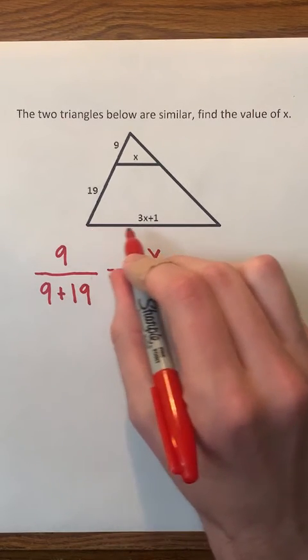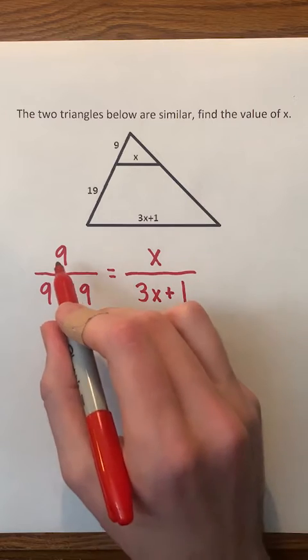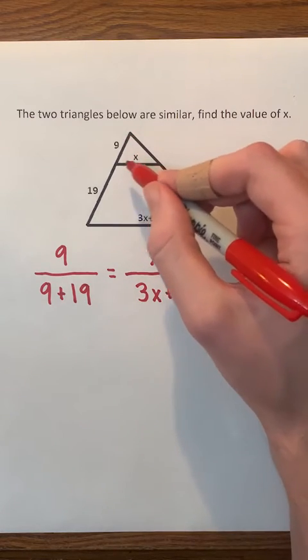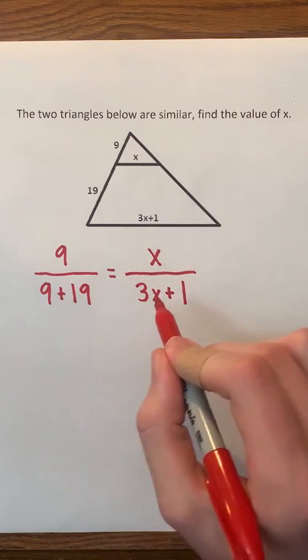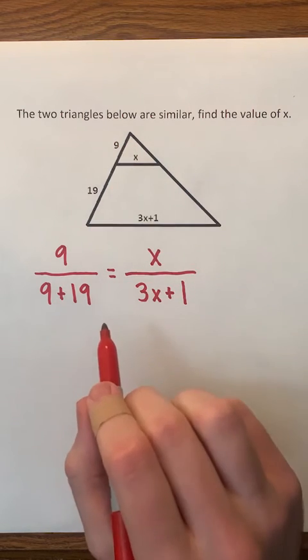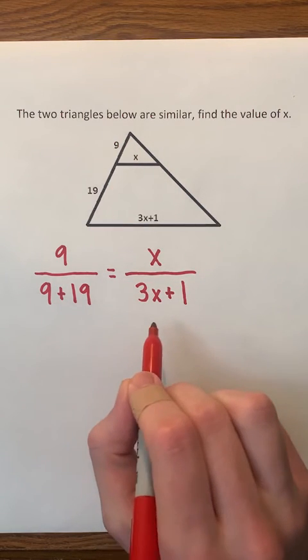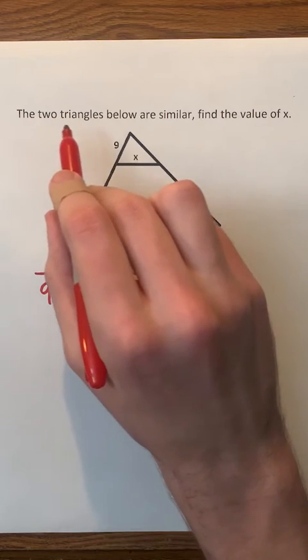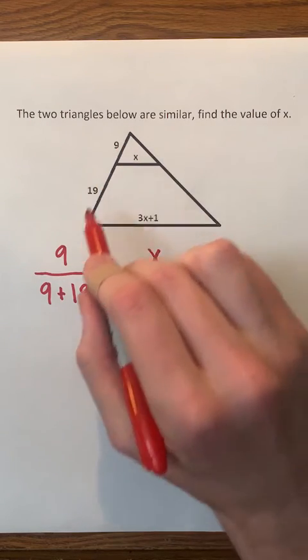Notice that the numerators of the fractions represent a smaller triangle, and the denominators of the fractions represent a larger triangle. The reason that we can set these two fractions equal to each other is because if two triangles are similar, their sides are proportional.